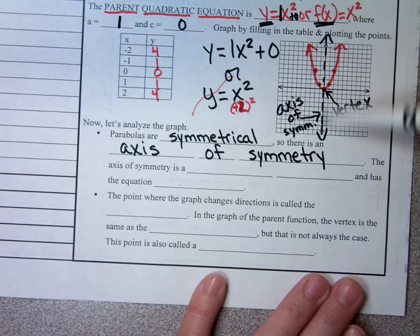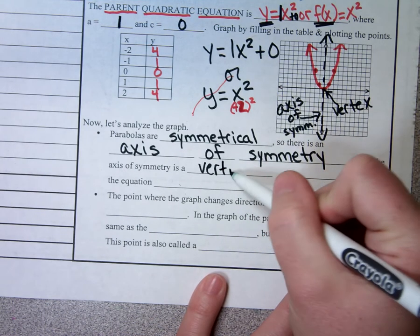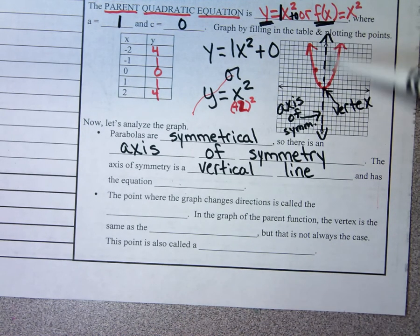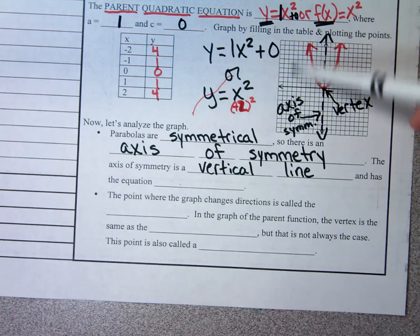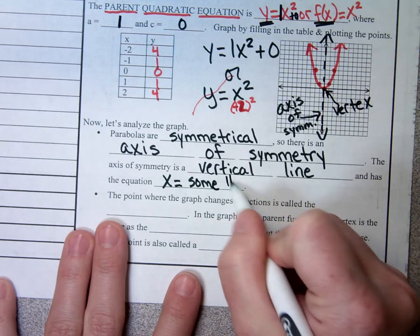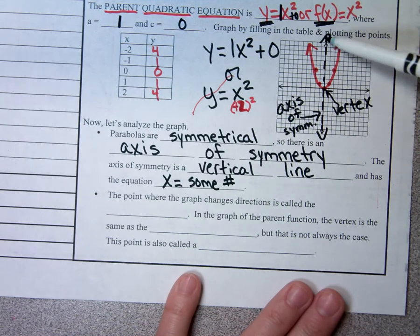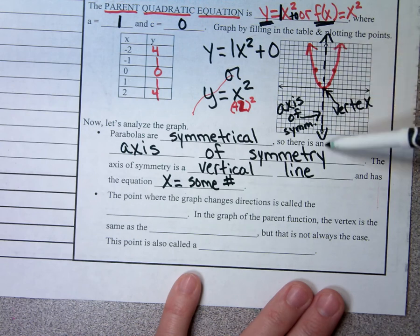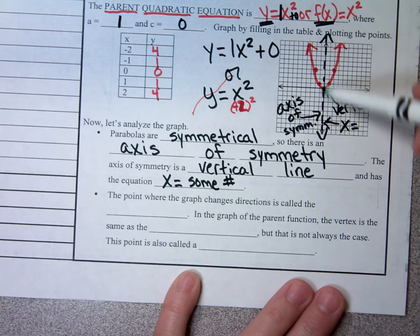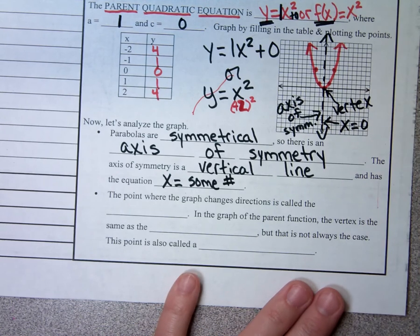The axis of symmetry is a vertical line. All vertical lines have an equation of x equals some number, because vertical lines only cross the x-axis. Everywhere on this axis of symmetry, x has a value of 0 — because we're not right or left at all. So the equation of our axis of symmetry is x equals 0.